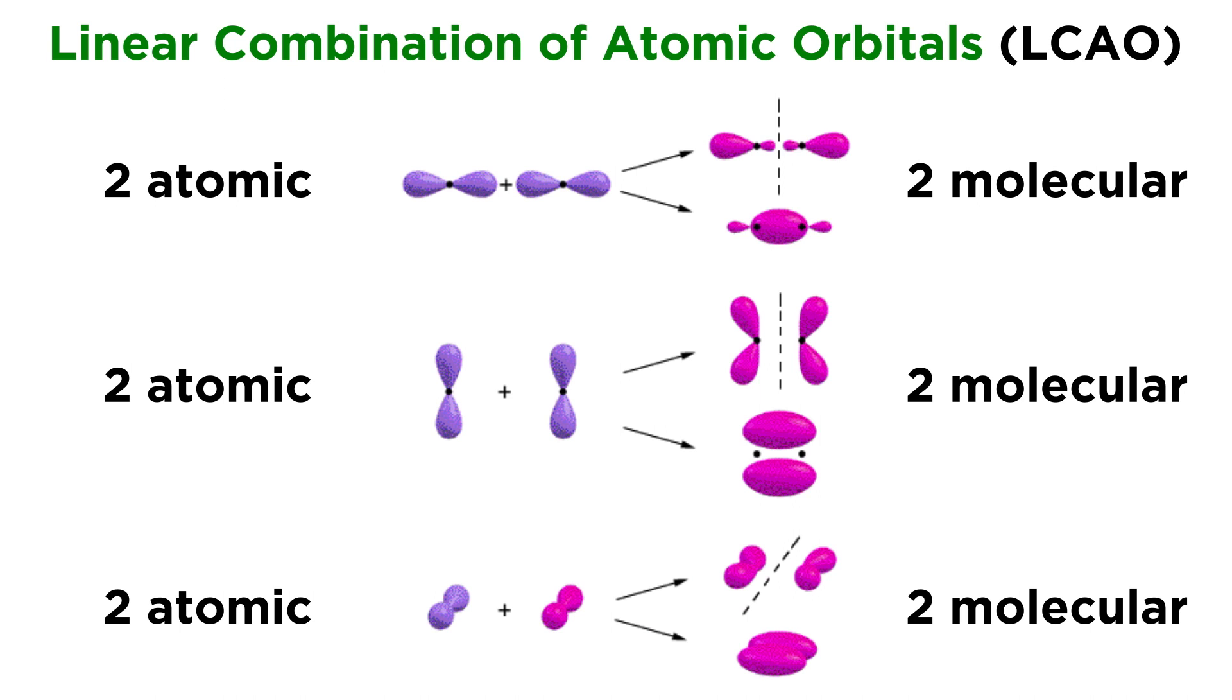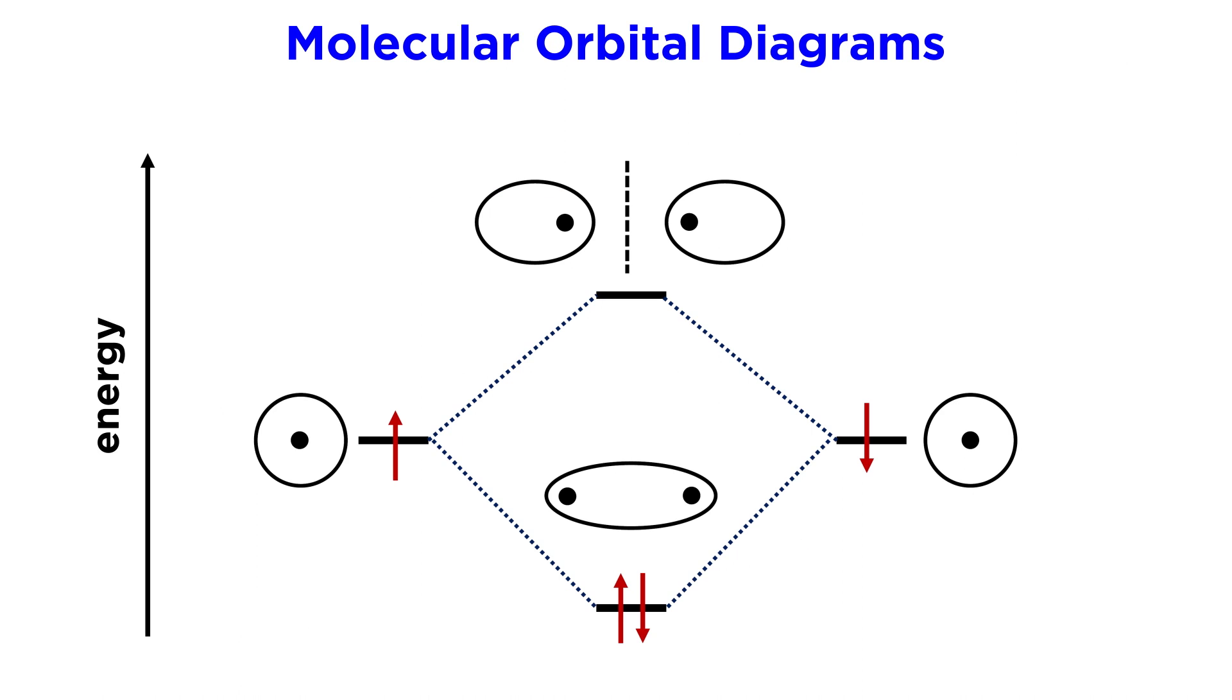We can depict these linear combinations with molecular orbital diagrams, as we have seen. The dashed lines show how the atomic orbitals on the sides combine to form the molecular orbitals in the middle, such as we see here for hydrogen, with two one-s orbitals combining to form one sigma-s orbital and one sigma-s star orbital.